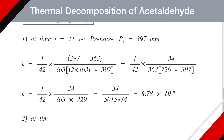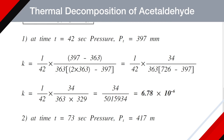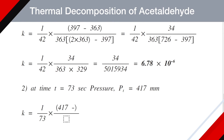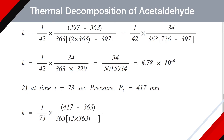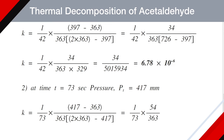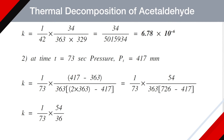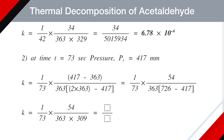In the second case at t = 73 s, Pt = 417 mm Hg: K = (1/73) × (417 − 363) / (363 × (2 × 363 − 417)) = (1/73) × 54 / (363 × 309) = 54 / 8,188,191 ≈ 6.59 × 10⁻⁶.